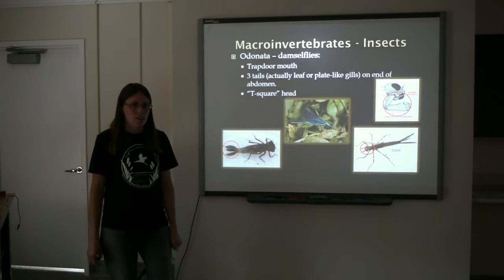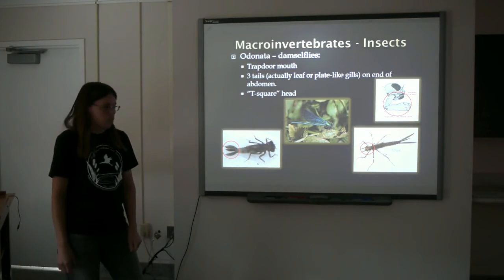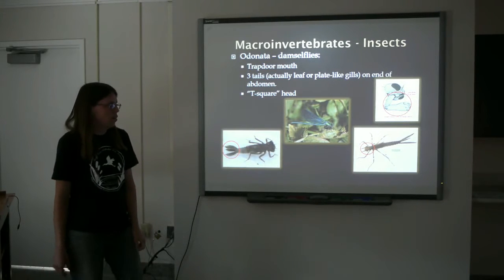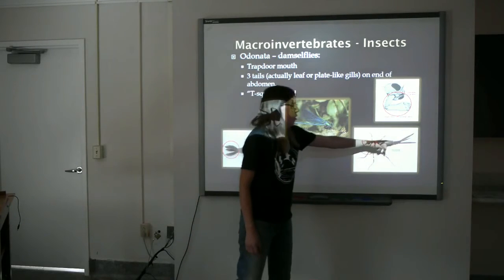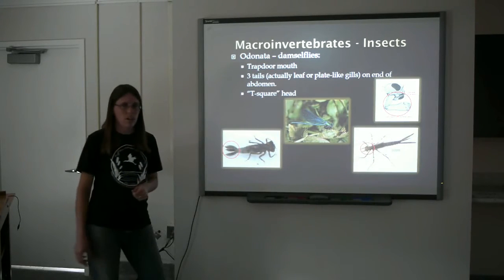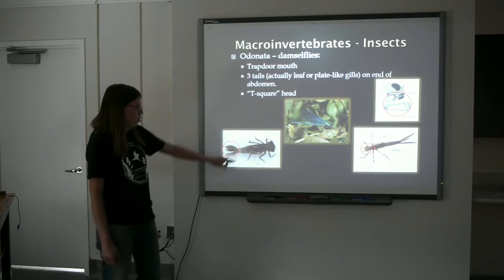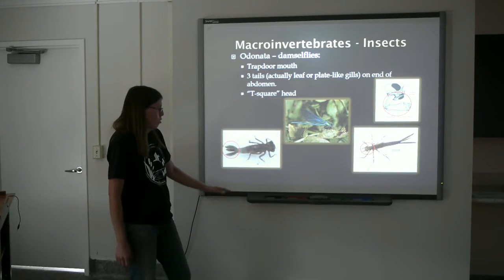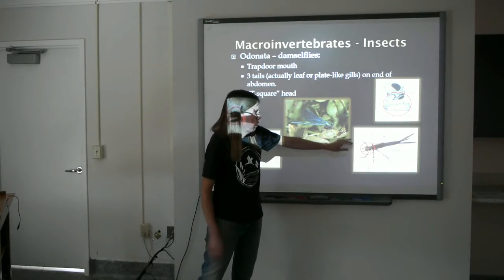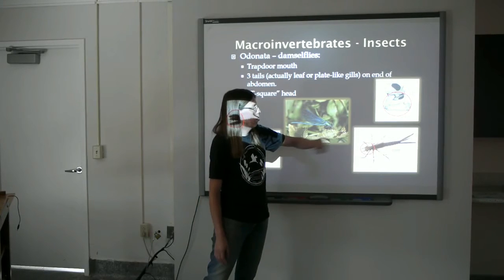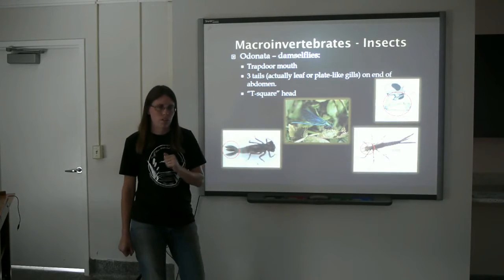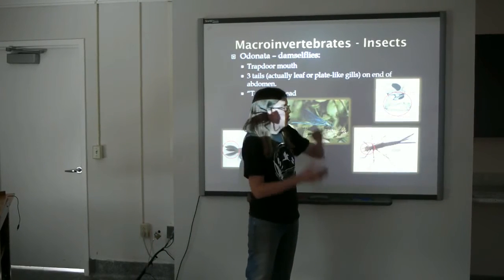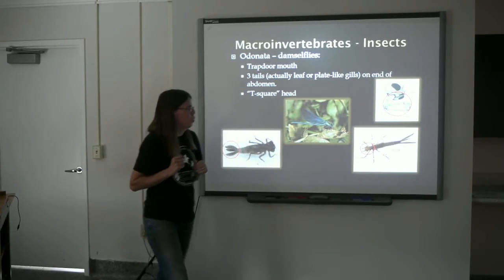Within the order Odonata, there are dragonflies and damselflies. They're pretty distinct — easy to tell the two apart. The damselflies, like the mayflies, have three tail segments. The tails in a damselfly are actually the gills, so you will not see gill plates or gill filaments on the abdomen of a damselfly. Also, the damselflies have this T-square head — a broad head on a long, slender body. The mouth of dragonflies and damselflies is very distinct. They have a trapdoor mouth; it's hinged and they're able to shoot the mouth out and catch other small macroinvertebrates.